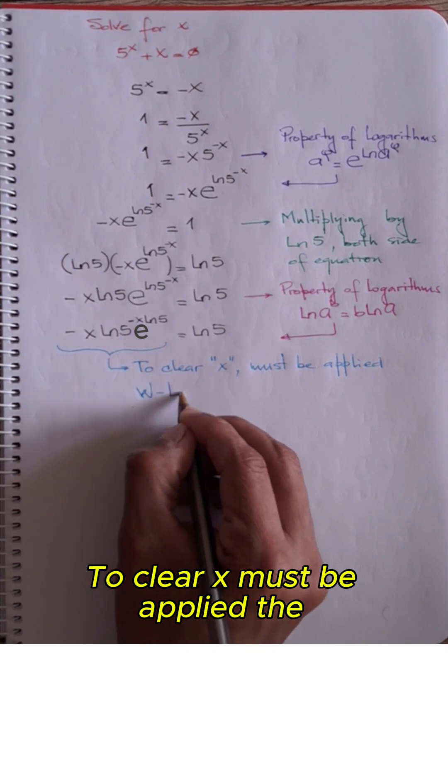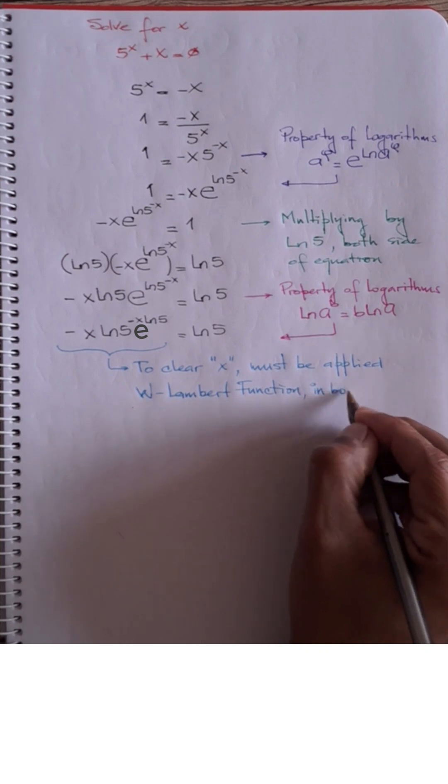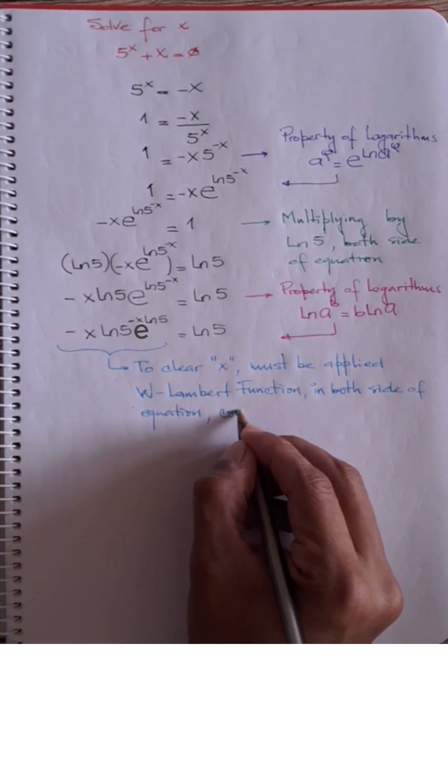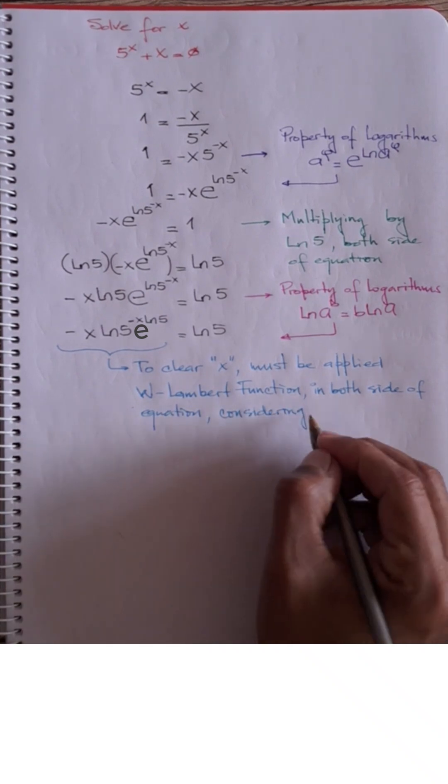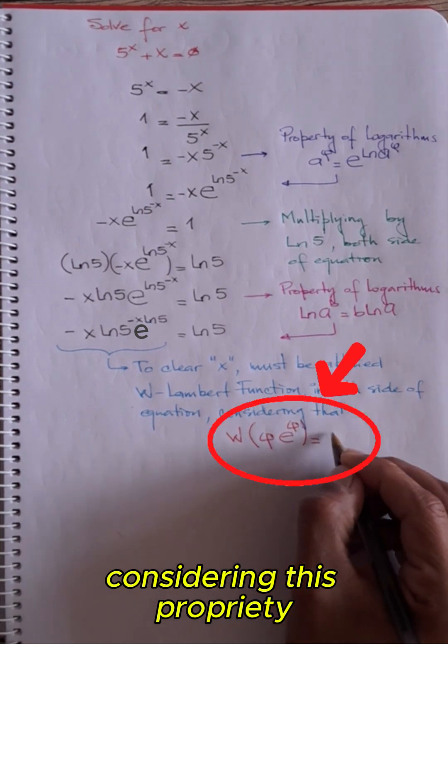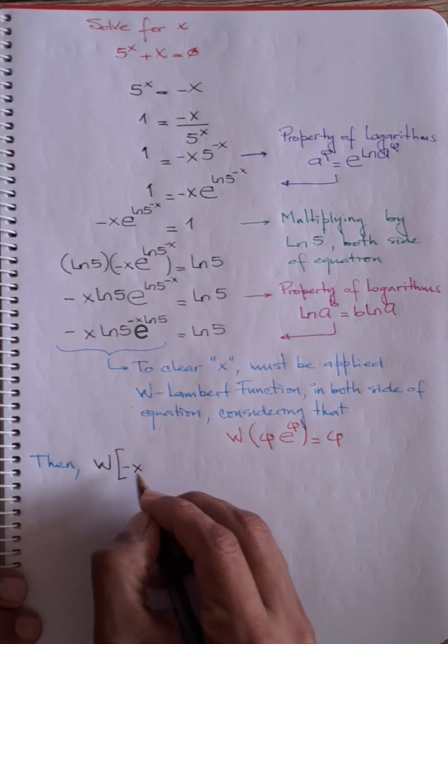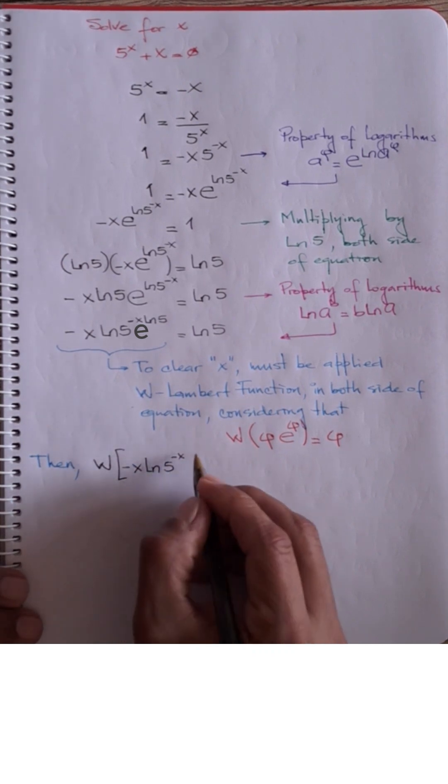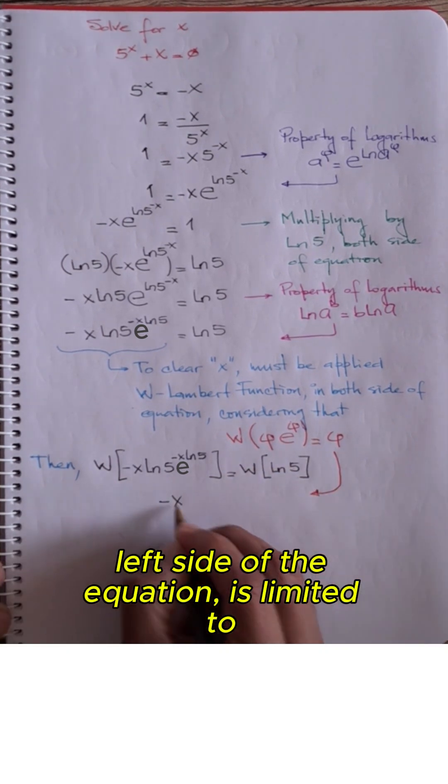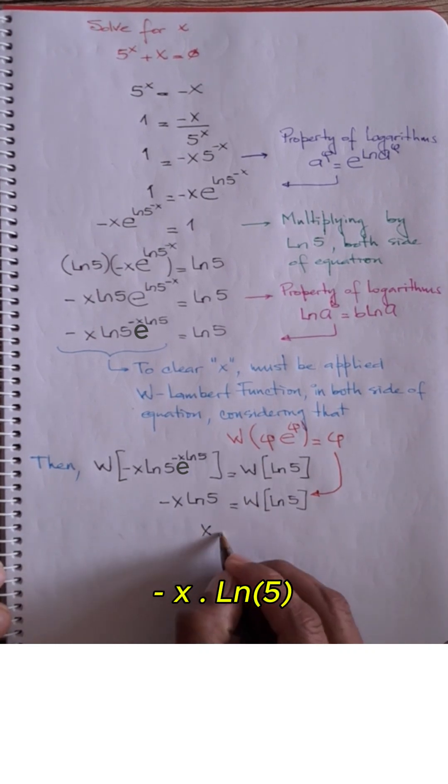To solve for x, we apply the W Lambert function on both sides of our equation. Considering this property, the left side of the equation is reduced to the argument of the function, in this case minus x multiplied by neperian of 5.